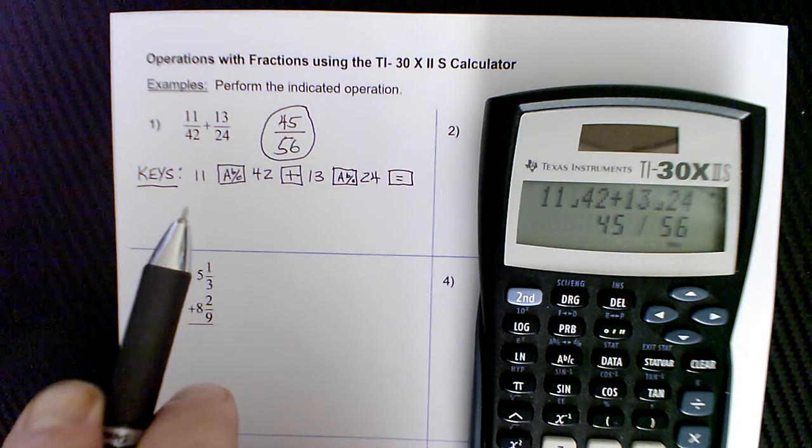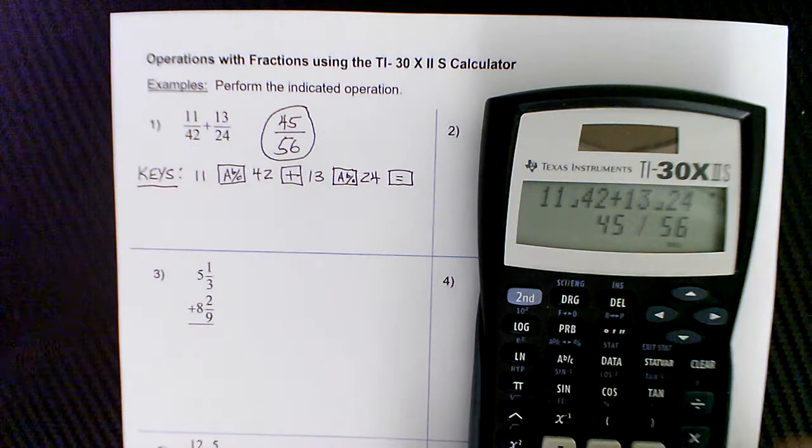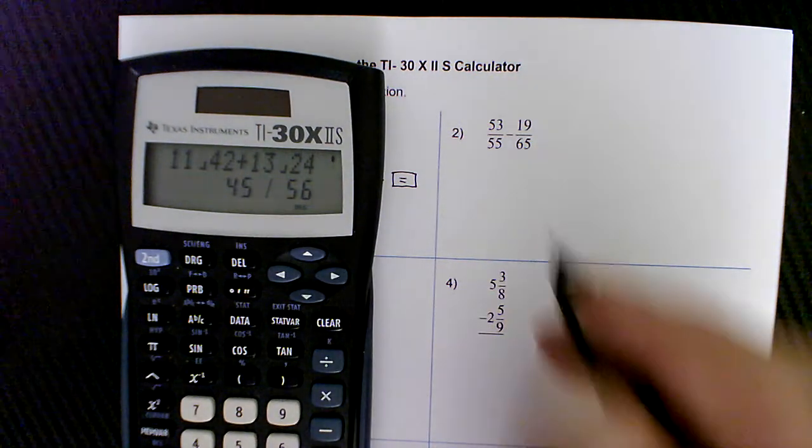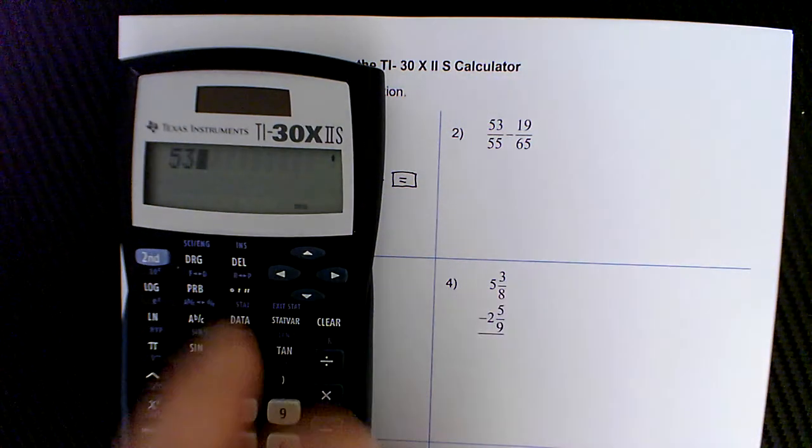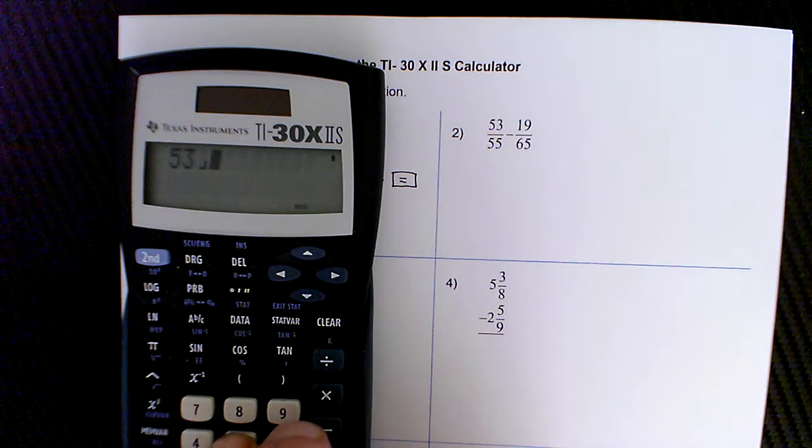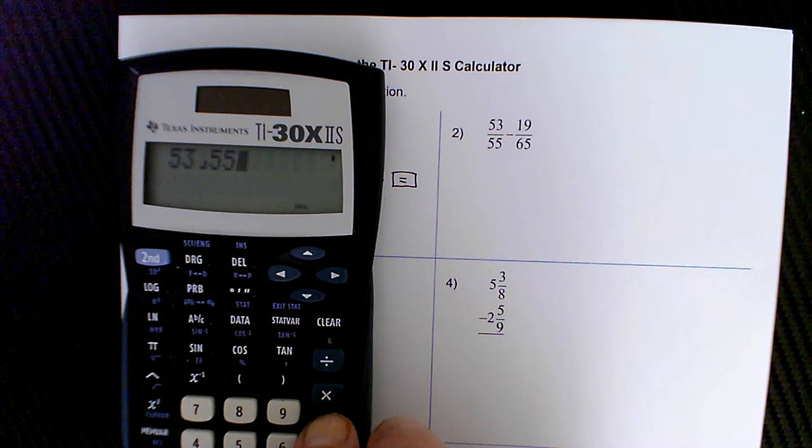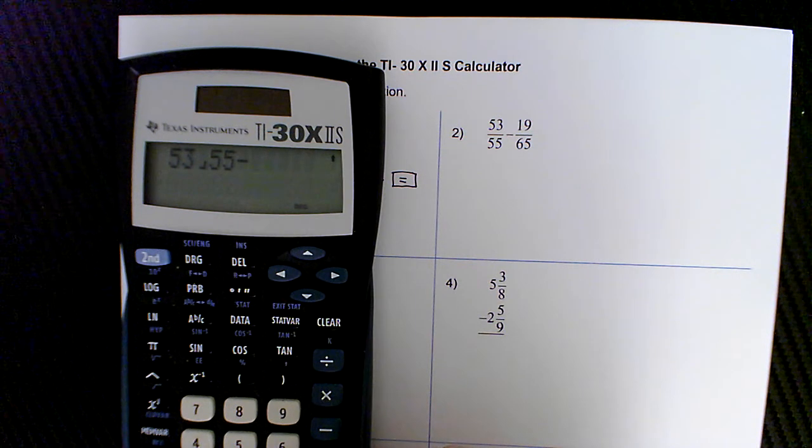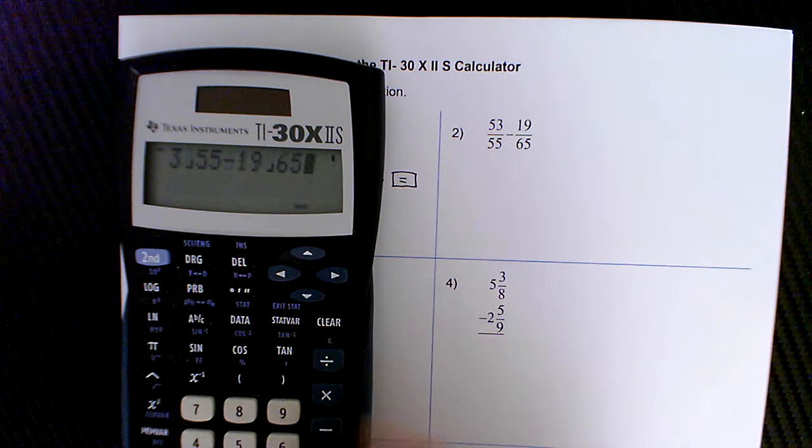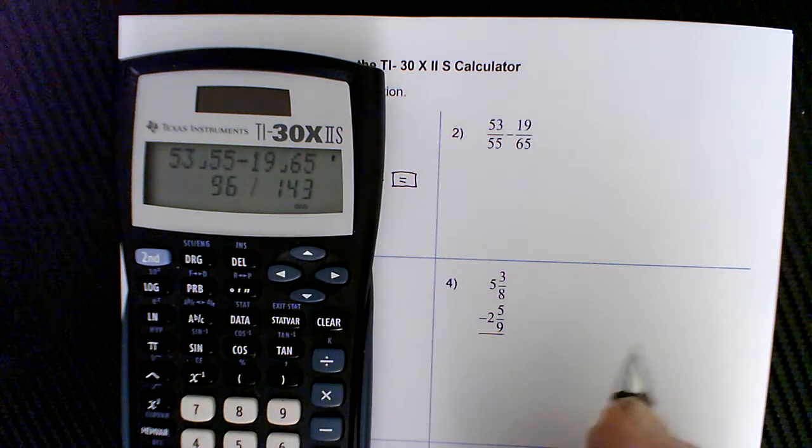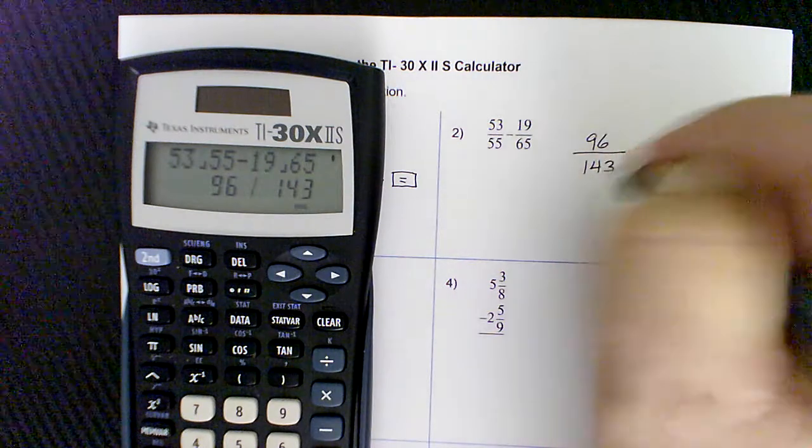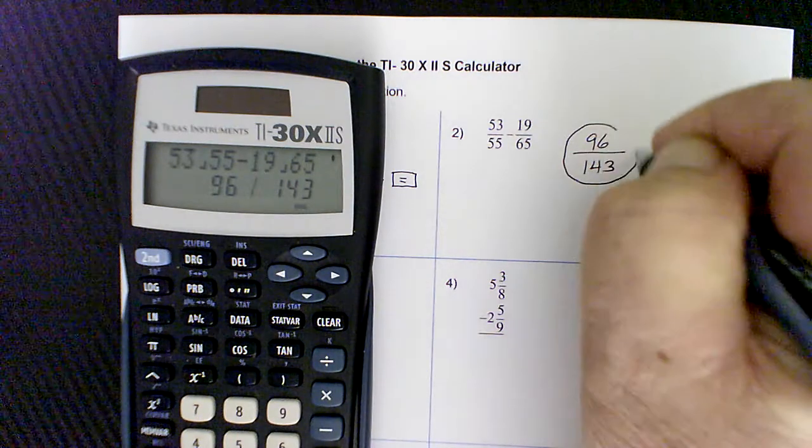So we'll run through the rest of these questions. I won't write down the keystrokes for this next one because it should be rather straightforward. Just type in 53, hit the fraction key. So that's my numerator, fraction key, denominator 55. We're subtracting, so minus. And we have 19 as the numerator, fraction key 65, denominator, press enter. And we get 96 over 143. So it does all that work for us.